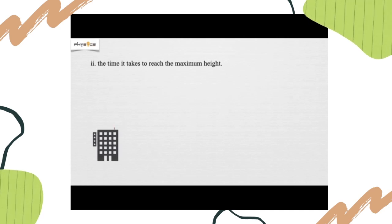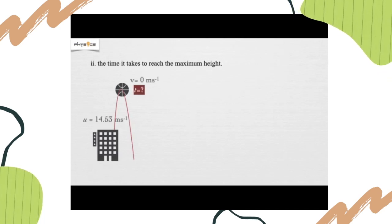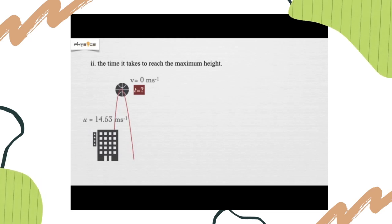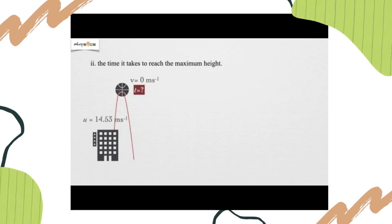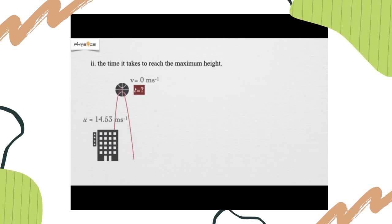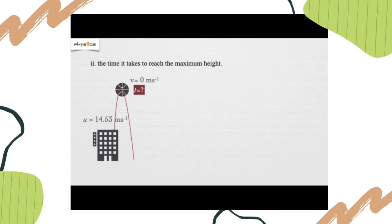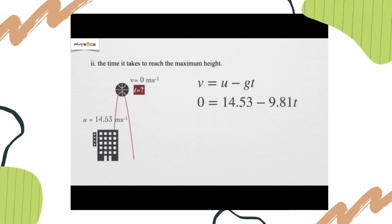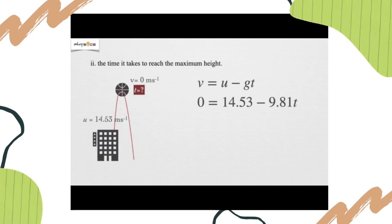Number two, the time it takes to reach the maximum height. Remember, at maximum height, V is equals to 0 meters per second. We have U equals 14.53 meters per second. We need to find T. We use V equals U minus GT. Substitute V with 0, U with 14.53, and G equals 9.81, and we got T equals 1.48 seconds.